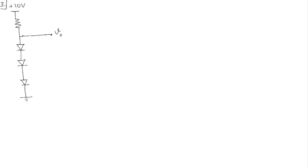Hi and welcome to this video. We are looking at problem 3, where we have been given a circuit with a 10 volt supply through a resistor and three diodes connected. If you assume the forward voltage of each diode to be 0.7 volts and all diodes are in forward bias, the output voltage is 0.7 plus 0.7 plus 0.7, which equals 2.1 volts.